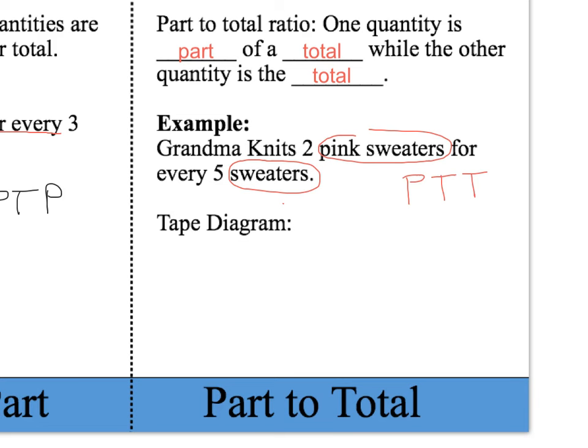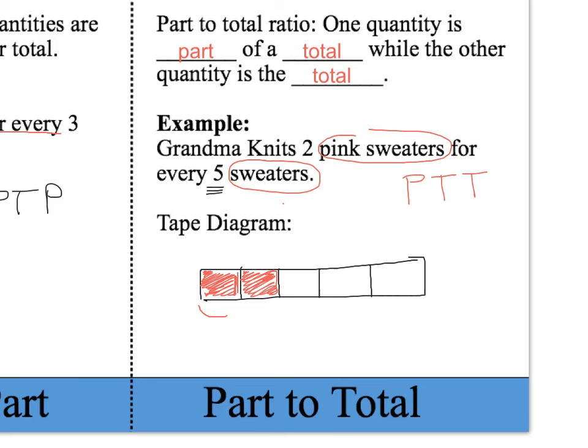For the tape diagram of a part-to-total ratio, instead of two separate rows, I draw one row with the total number of boxes. The total is five, so I draw five equal boxes. Then I color two of them to represent the two pink sweaters.